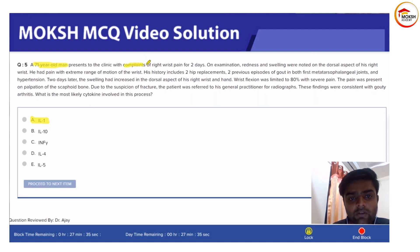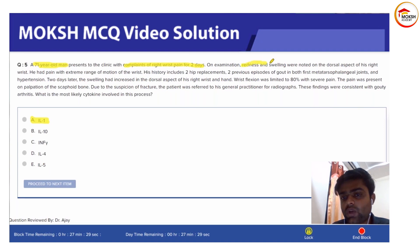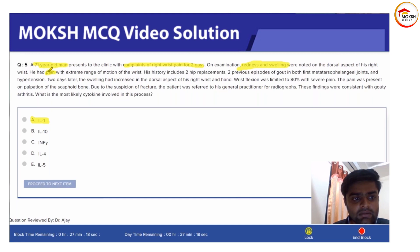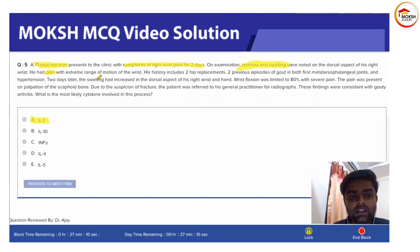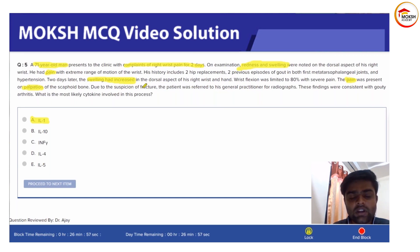Let's review the key points. A 71-year-old man with right wrist pain for two days — on examination there is swelling and redness, meaning there is some kind of inflammation going on on the dorsum of his wrist. His history includes two hip replacements, two episodes of gout, and hypertension. Two days later, swelling increased, and there was pain on palpation, leading to referral.